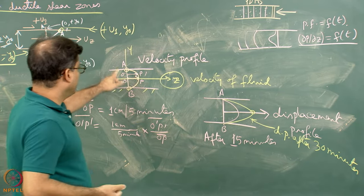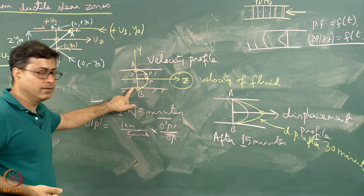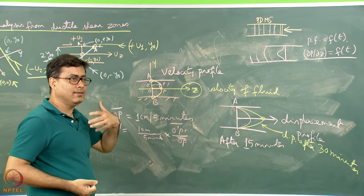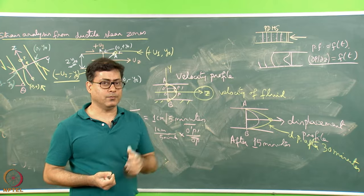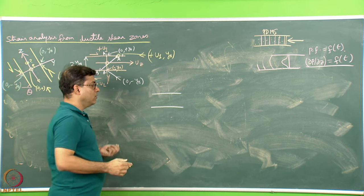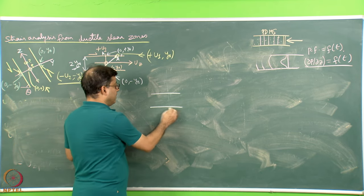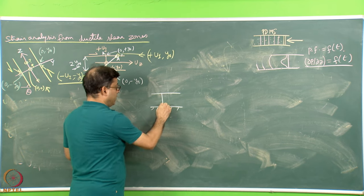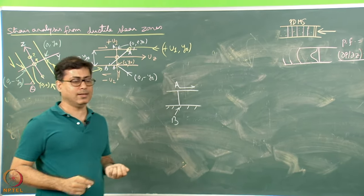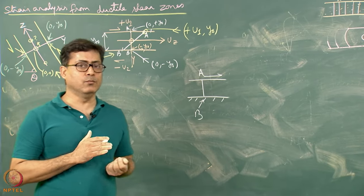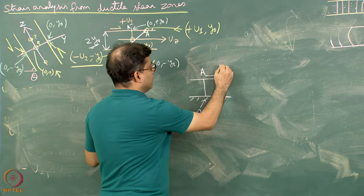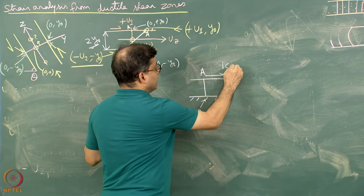So for a velocity profile which does not change, the displacement profile will keep on changing with time. This was explained in terms of Poiseuille flow only. Now let me repeat the same for Couette flow to remove any ambiguity. In Couette flow: horizontal channel, very long rigid boundaries, Newtonian viscous fluid, bottom boundary static, marker AB placed inside, and then the top boundary is sheared at a controlled rate — say 1 centimetre per 10 minutes — achievable with standard laboratory instruments.